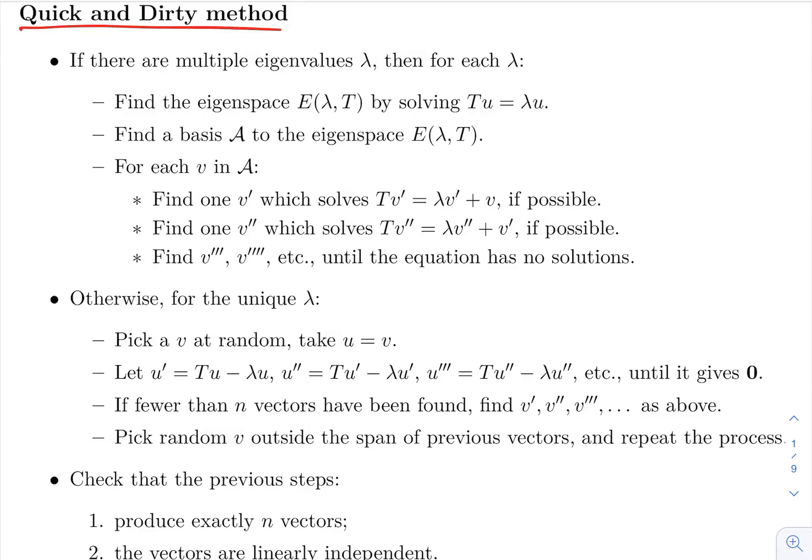Okay, so now another method which I also include in this category, which I call the quick and dirty method, is the following. This one is most appropriate when there is a unique eigenvalue. You could in principle adapt it to the situation when you have multiple eigenvalues, but when you have a unique one, then this one really is much simpler.